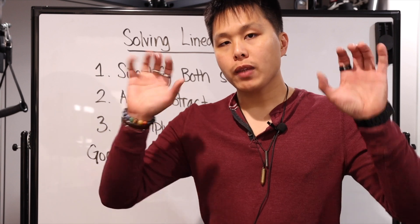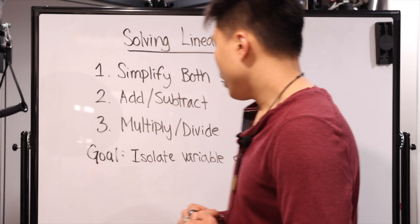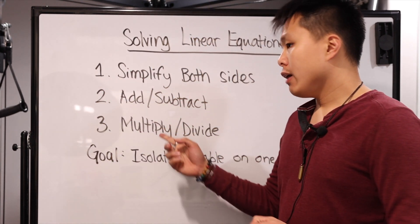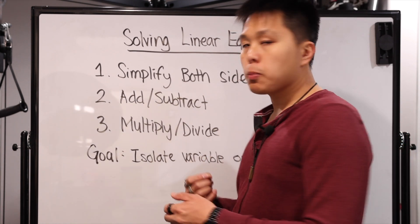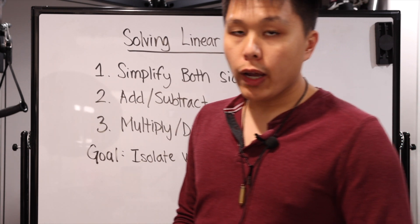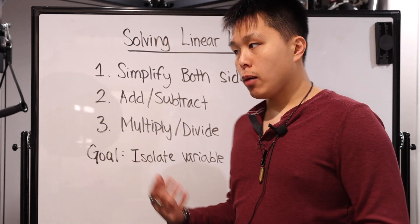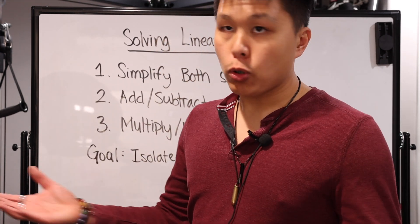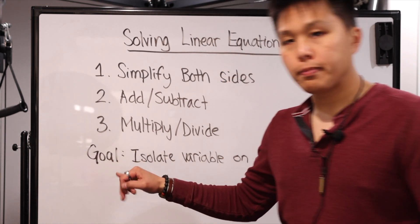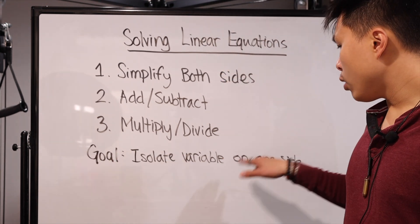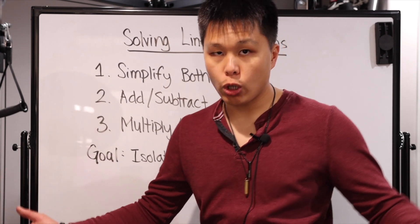Equation means they're equal, so you have to make sure that what you do to one side, you always do to the other. If it happens to be a fraction, you're usually going to either multiply the reciprocal or divide — same thing. If it's just a number, you're usually dividing or multiplying by the reciprocal. Either way, your goal is to isolate the variable on one side and everything else on the other. And that's how you end up solving it.